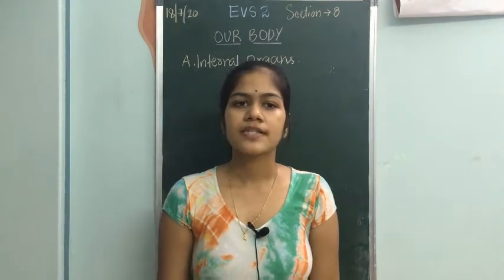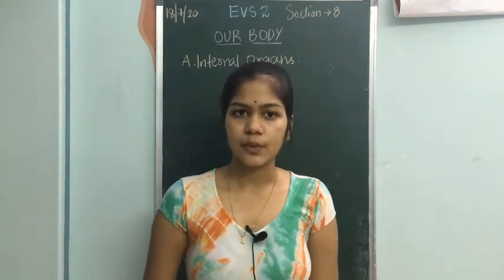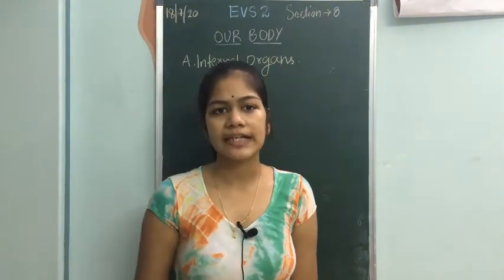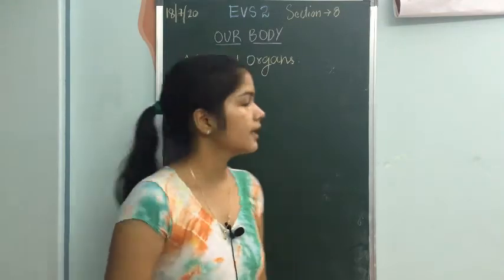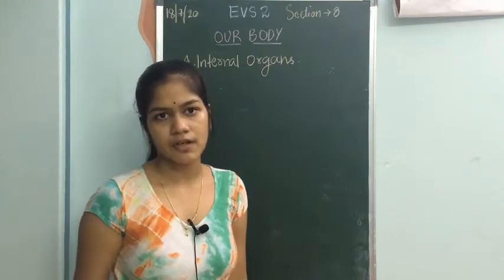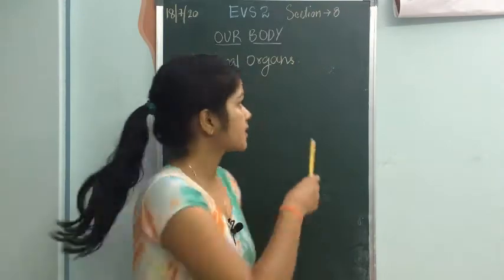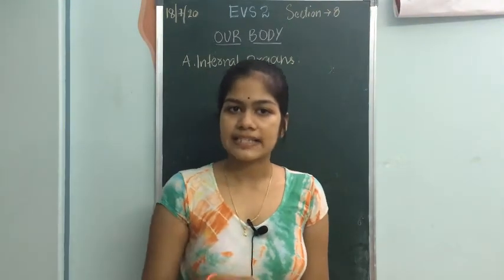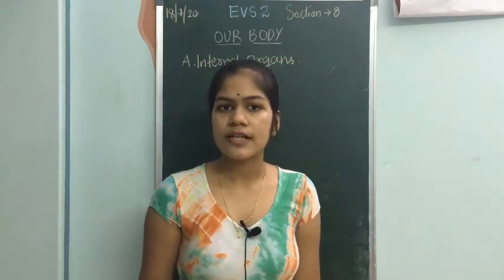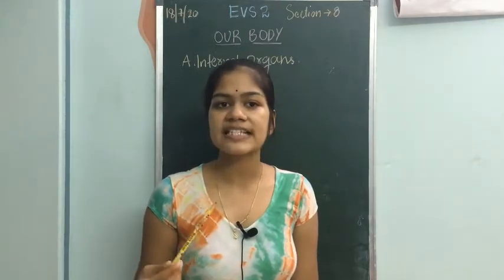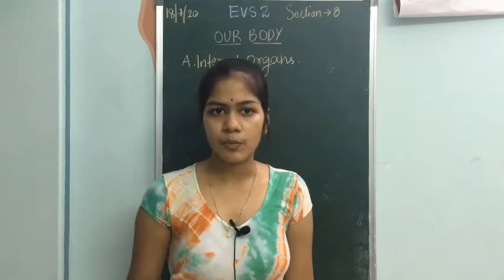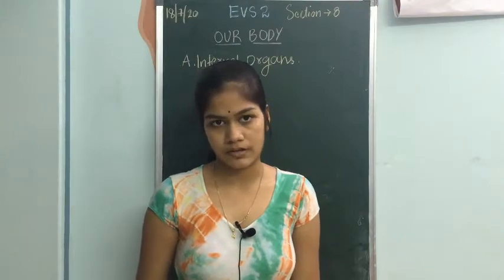Welcome to EVS 2. Today we are learning about our body, specifically about internal organs. The body has many parts, and each part has a different function, so we call them organs. Organs are of two types: external organs and internal organs. External organs are present outside the body, and internal organs are present inside the body. We cannot see internal organs because they are inside the body.